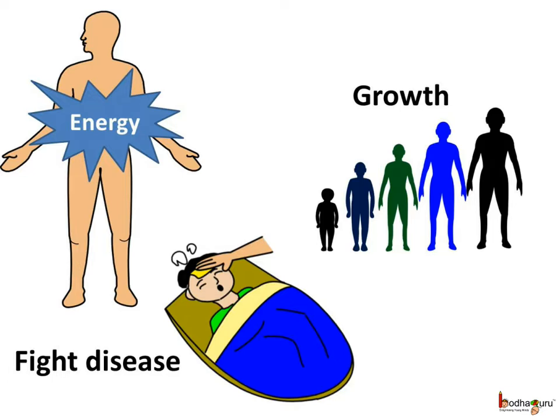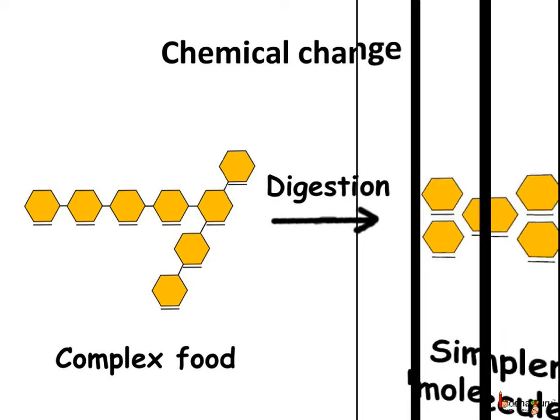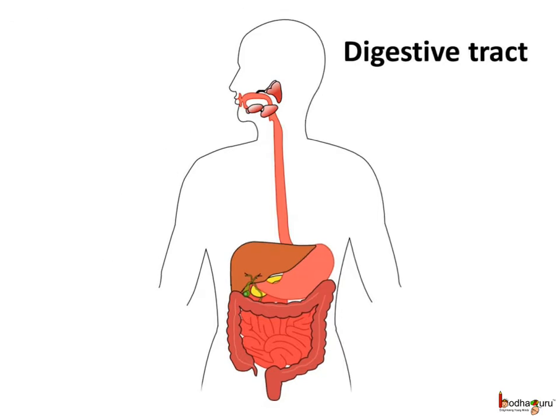But how do various complex substances turn into simpler substances? It is through a chemical change. The complex food turns into simple substances — the complex molecule breaks down and new substances are formed. When the food passes through the digestive tract, different chemicals react with food particles and simpler molecules are formed.